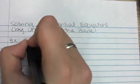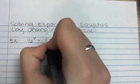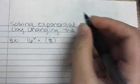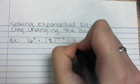So the first one is going to be 16 to the v multiplied by 1/8 to the negative v minus 3, and that equals 32.